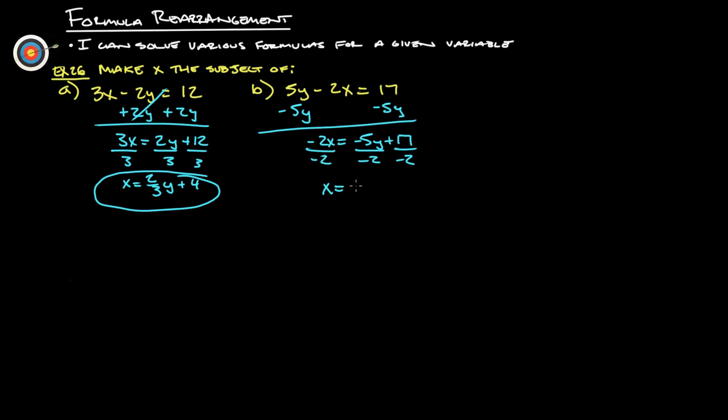So we have x equals, the two negatives turn into a positive there. So we have 5 halves y or 2.5y, and then 17 halves is 8 and a half. Now we have a positive divided by a negative, so that's going to be negative 8 and a half.